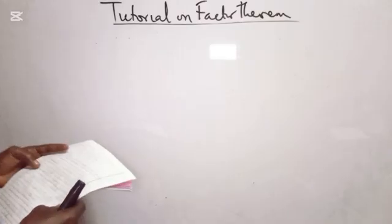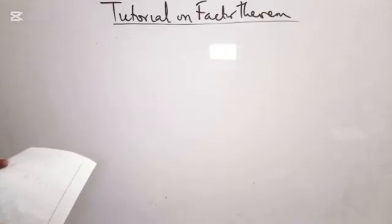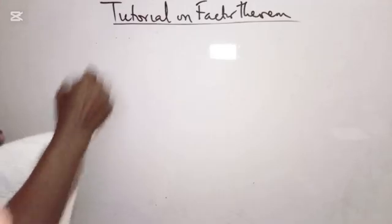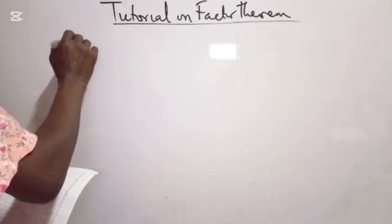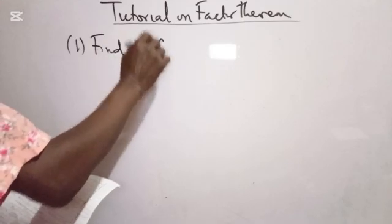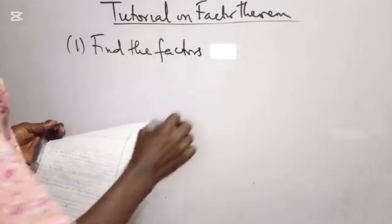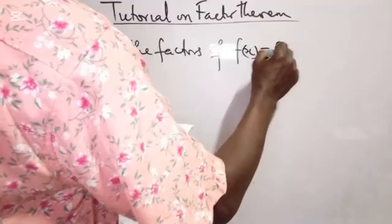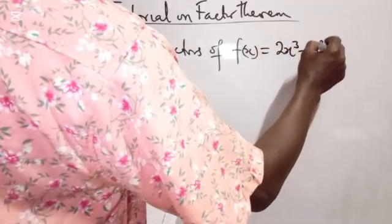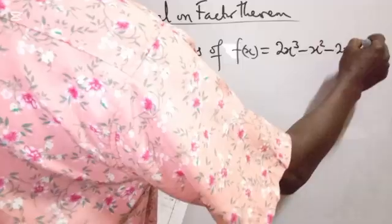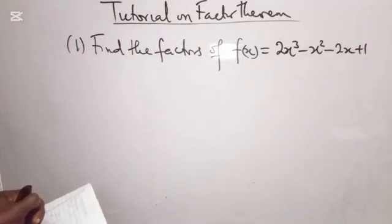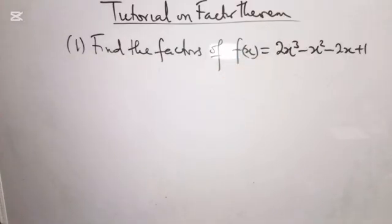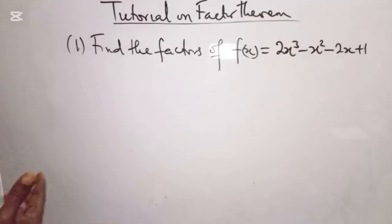We shall start with Example 1: find the factors of f(x) = 2x cubed minus x squared minus 2x plus 1. We want to find the factors of this particular polynomial. This is a polynomial of third degree because the highest degree of x is 3.